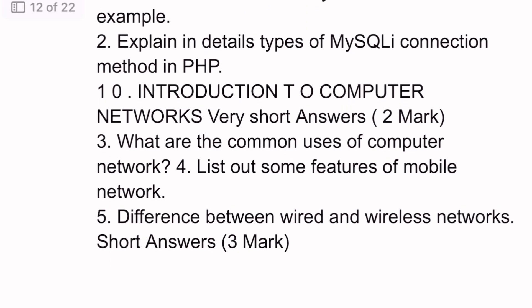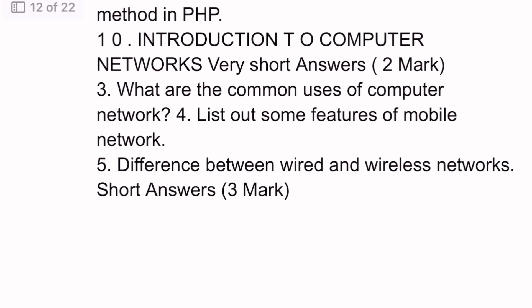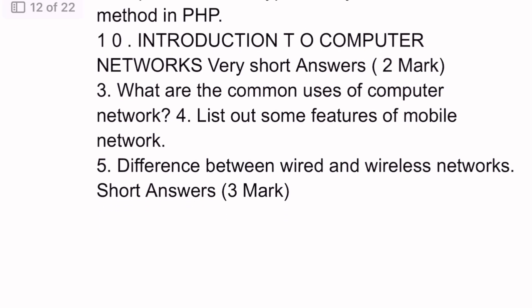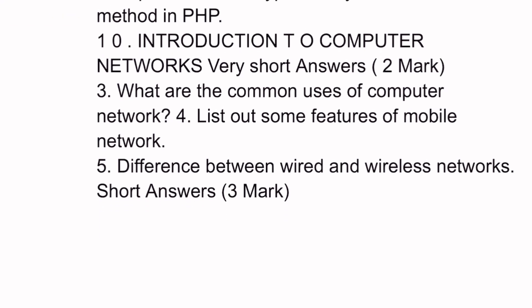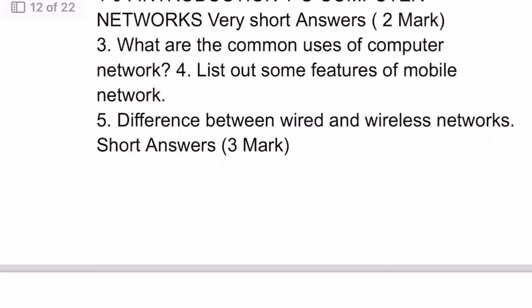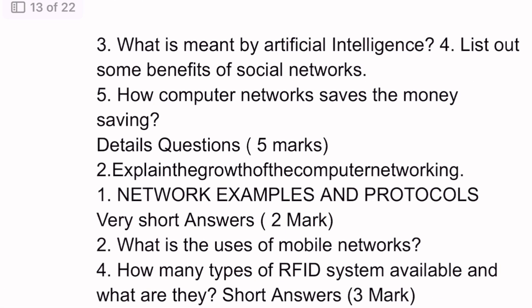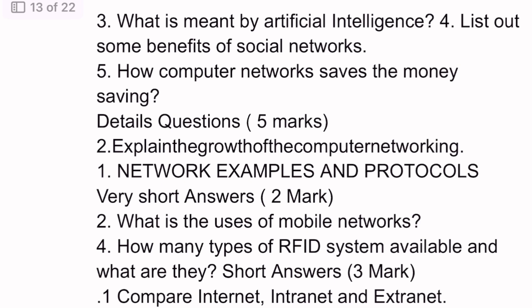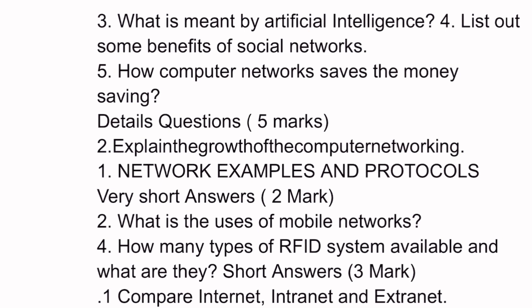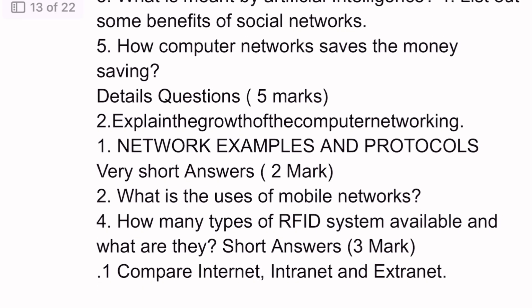Chapter Ten: Two mark questions — 3rd, 4th, and 5th questions on wired and wireless networks. Common uses of computer network. Three mark questions: 3rd question — artificial intelligence, list out. 4th question — benefits of social network. 5th question — computer network saves money. Five mark detail: 2nd question — important.